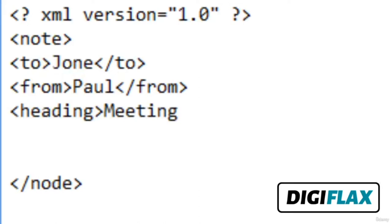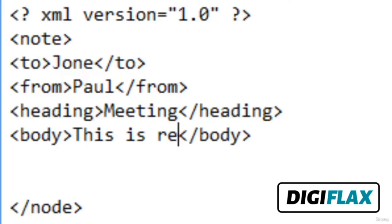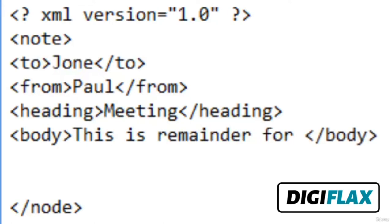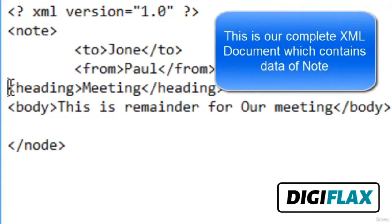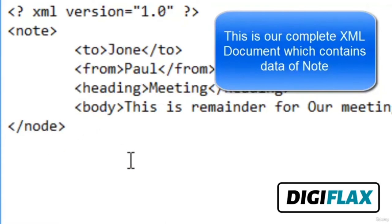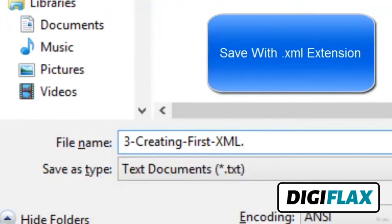In the body tag I write the actual message: 'This is a reminder for our meeting.' So I have created one root node which is 'note', and four children: 'to', 'from', 'heading', and 'body'. This is our simple XML document. To save this document, press Ctrl+S, select the folder where you want to save it, and save the document using the .xml extension.